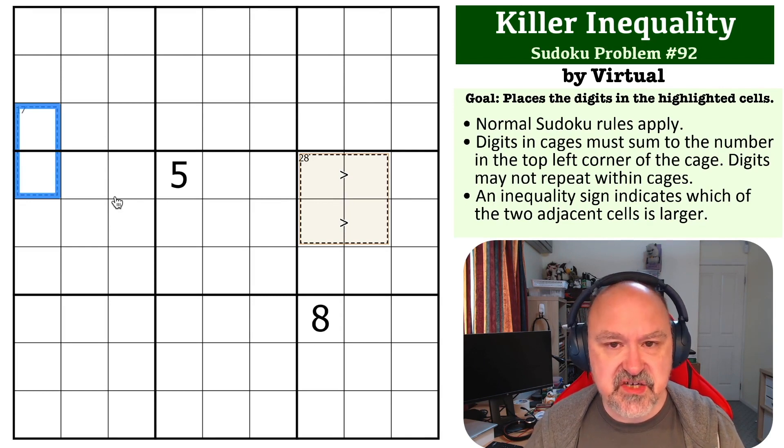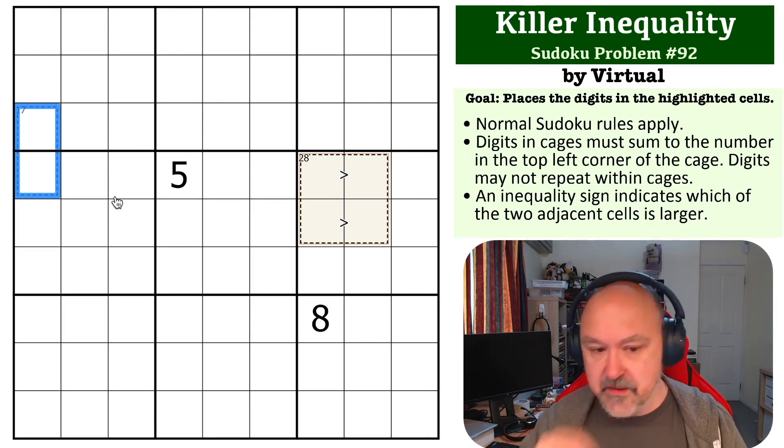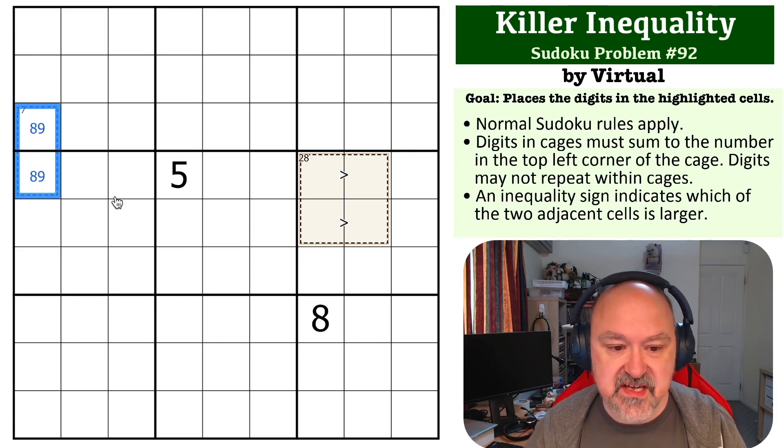So the way this one works is a 17 cage in two cells is completely forced. The only way you can do that is to add the two largest Sudoku digits, which is 8 and 9.